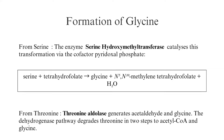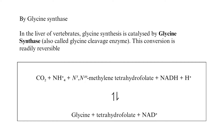By Glycine Synthase: In the liver of vertebrates, glycine synthesis is catalyzed by glycine synthase, also called glycine cleavage enzyme. This conversion is readily reversible.